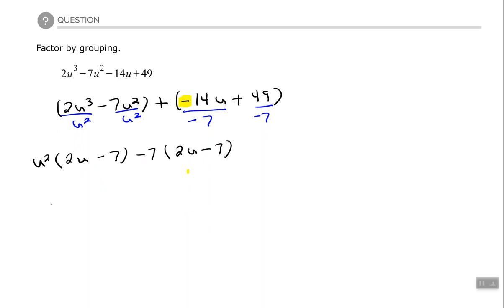Alrighty. Factor out the common binomial, 2u minus 7. And then we have left over u squared minus 7. And that's a wrap for that problem. Alrighty. Good people. Hope you found that video to be helpful. And I will see you on the next one. Thank you.